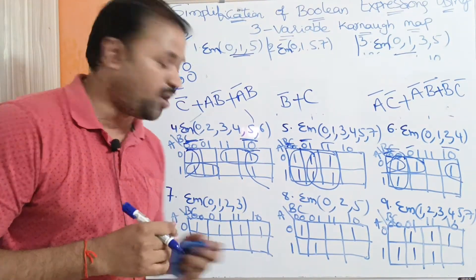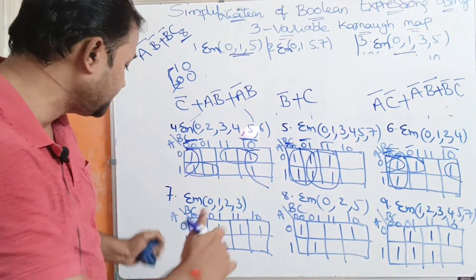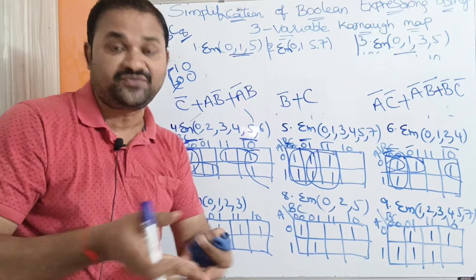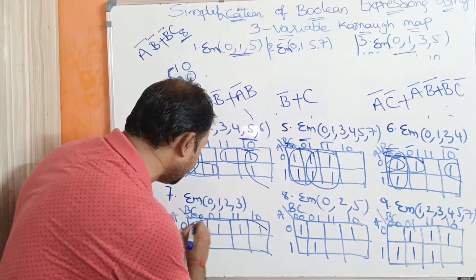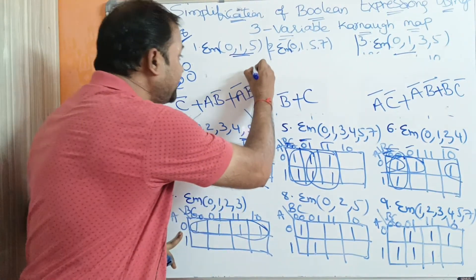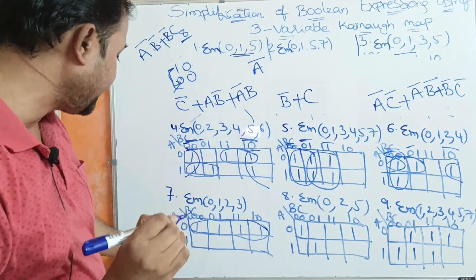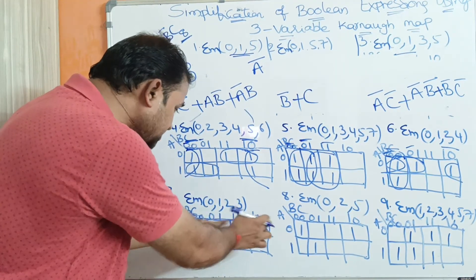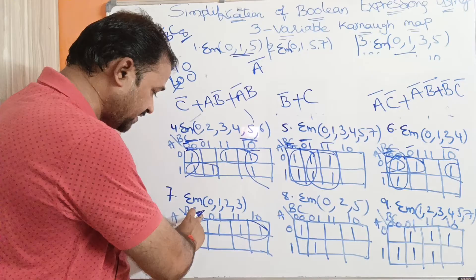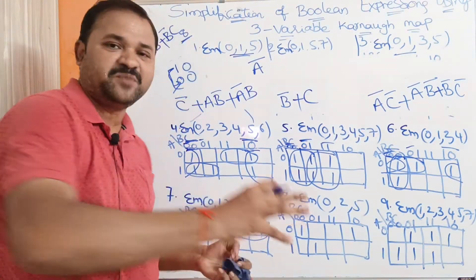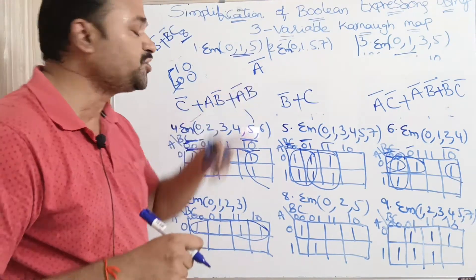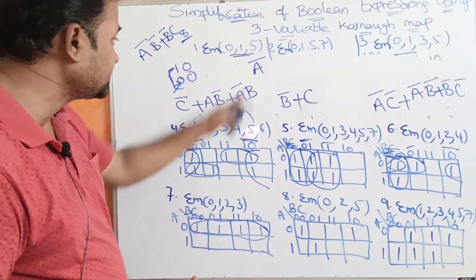Problem 7: ΣM(0, 1, 2, 3). The entire first row (A=0) contains all 1s, so we form a group of 4. A is 0 (A-bar). All B and C variables change from 0 to 1, so every variable except A is neglected. A-bar multiplied by 1 is A-bar. The simplified expression is A-bar.